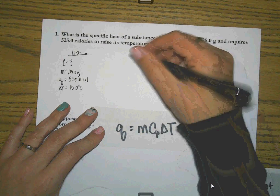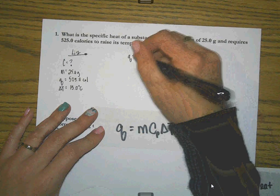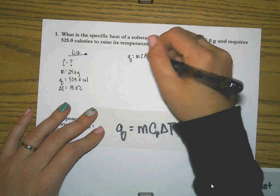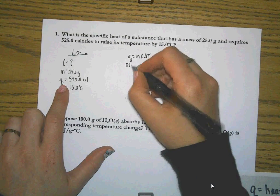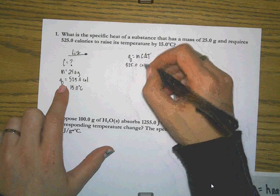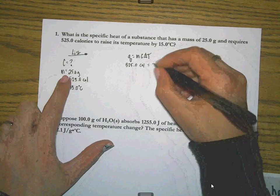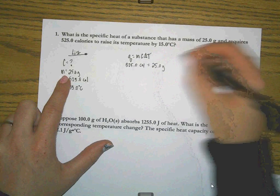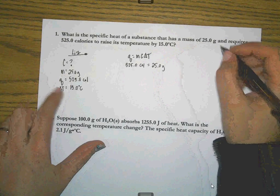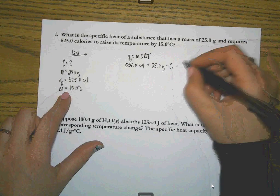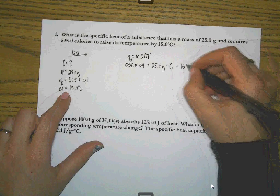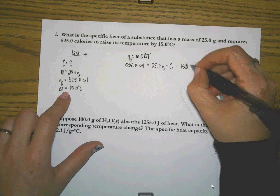So we're going to plug this into this formula right here. Q is equal to MC delta T. My Q based on my list is 525.0 calories. My M is 25.0 grams. My C is what I'm solving for. And then my delta T is 15.0 degrees Celsius.